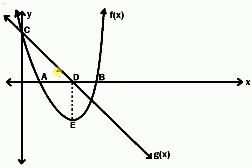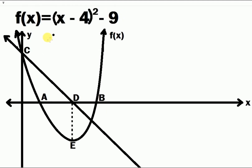On the sketch we have 5 unknowns plus the equation of G of X. Our unknowns are 2 X intercepts, which are A and B. We also have an X intercept of G of X which is D. A and B are X intercepts of F of X, and C is the Y intercept of both G of X and F of X. E is the turning point of F of X. So before we find the equation of G of X, we are going to find the coordinates of each point A, B, C, D, and E.